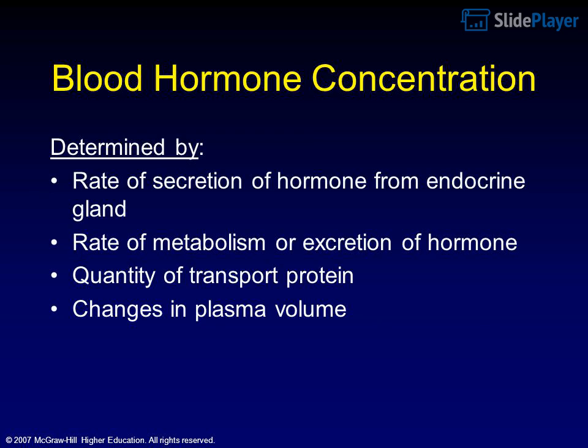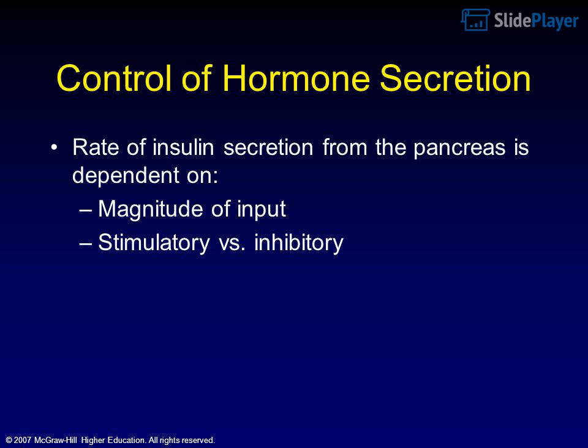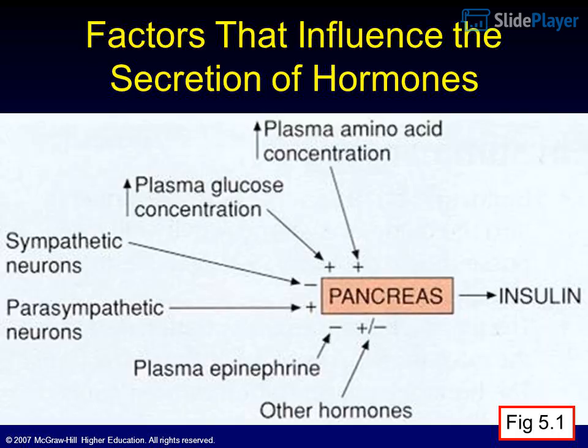Blood hormone concentration is determined by: rate of secretion of hormone from the endocrine gland, rate of metabolism or excretion of hormone, quantity of transport protein, and changes in plasma volume. Control of hormone secretion: the rate of insulin secretion from the pancreas is dependent on the magnitude of input, stimulatory versus inhibitory.